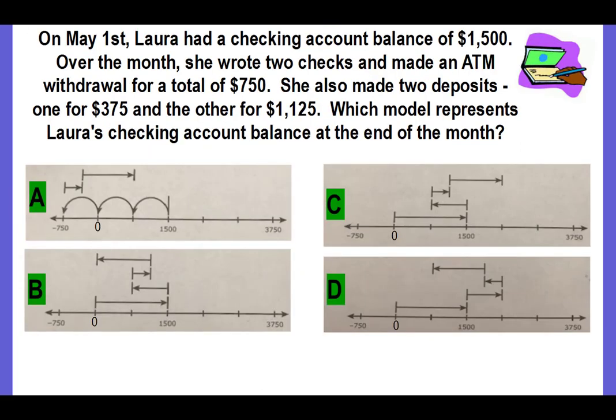Problem number two. On May 1st, Laura had a checking account balance of $1,500. Over the month, she wrote two checks and made an ATM withdrawal for a total of $750. She also made two deposits, one for $375 and the other for $1,125. Which model represents Laura's checking account balance at the end of the month?